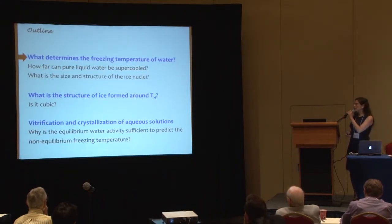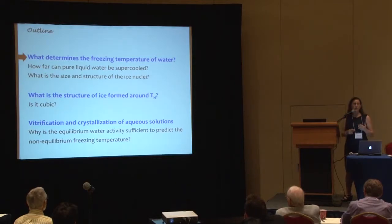The outline of the talk is as follows: I'll discuss first what determines the freezing temperature of water and how far we can go before water has to freeze. Then, the size and structure of ice nuclei and how ice nuclei in the glass imply crystallization on re-warming. Then the structure of ice formed around the glass and the temperature of homogeneous nucleation. Finally, the competition between crystallization and vitrification in solutions — very simple solutions that I hope will stimulate debate.